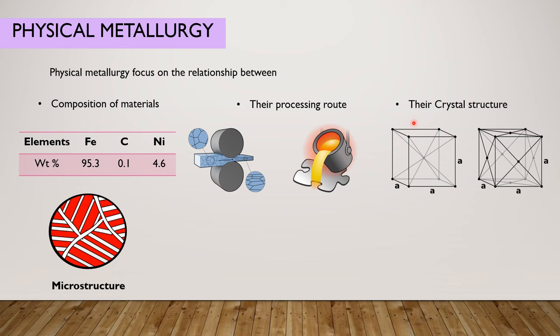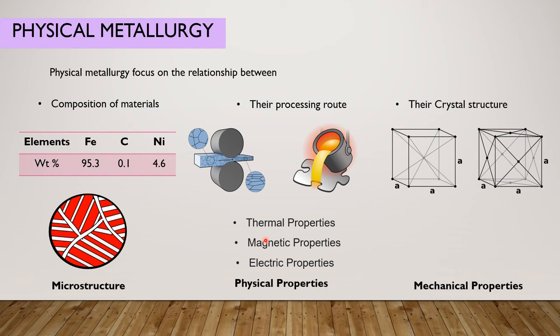But physical metallurgy is a branch of material science that especially focuses on the relationship between the composition of materials, their processing technique, their crystal structure that eventually affects the microstructure and its physical properties that include thermal properties, magnetic properties, electric properties, and it also influences the mechanical properties that include strength, hardness, and toughness.